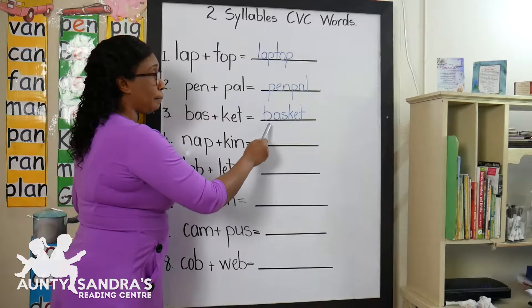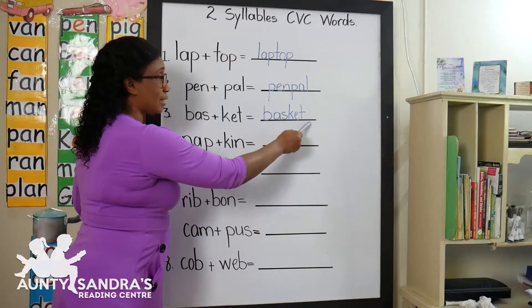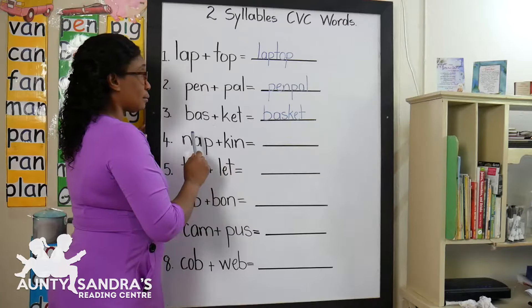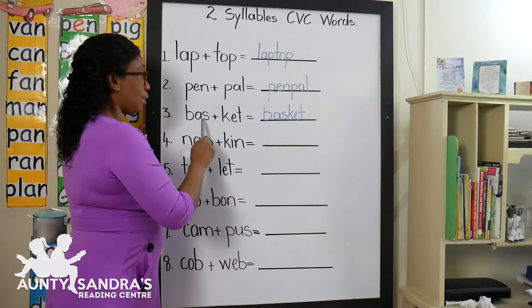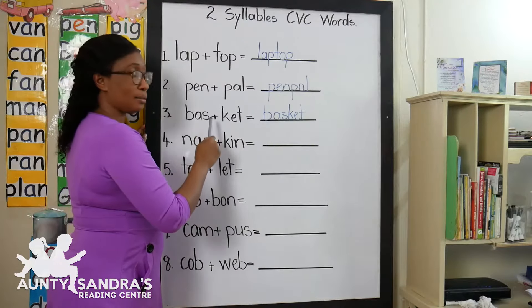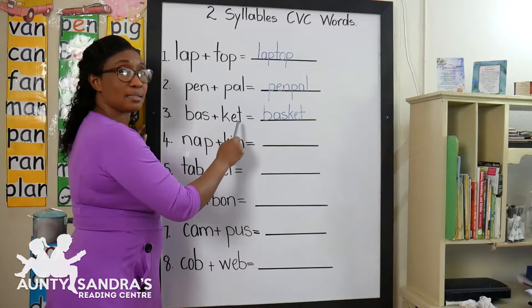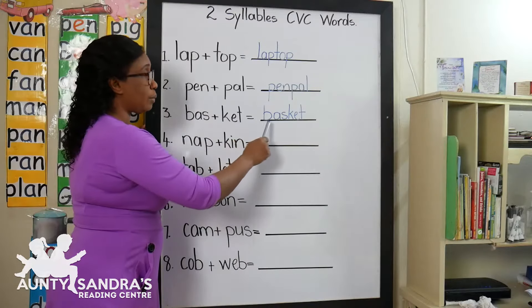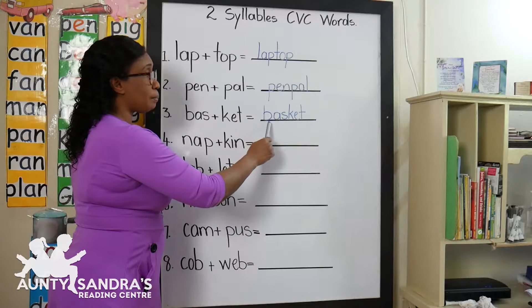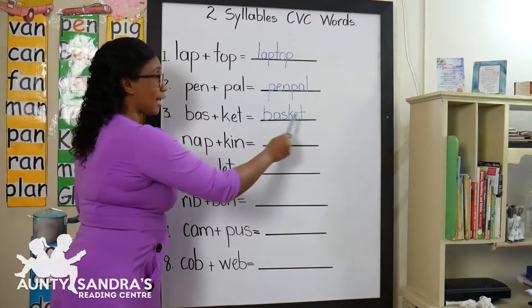You get basket. Basket. B-A-S, Bas, plus K-E-T, Ket. Join them together — basket.